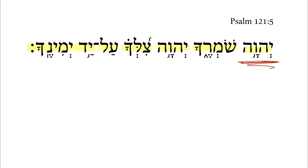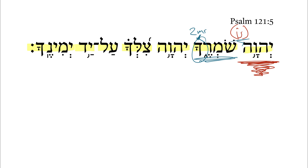We begin here with the divine name Yahweh, or Adonai as I would pronounce it, and then we have 'is' in this verbless clause. Next we get the participle — this is the qal participle masculine singular absolute plus a 2ms suffix — and so we get 'the one who keeps you.' Again, if we see this shamar as a title in the participle we could say 'the Lord is your keeper,' but as a substantival participle we would say 'the one who keeps you.'